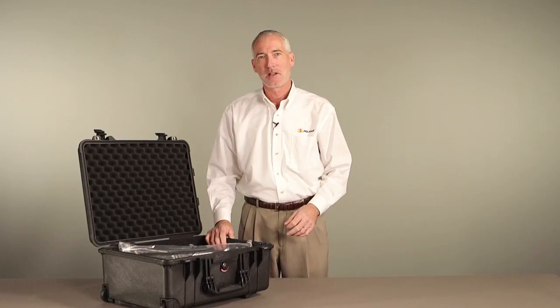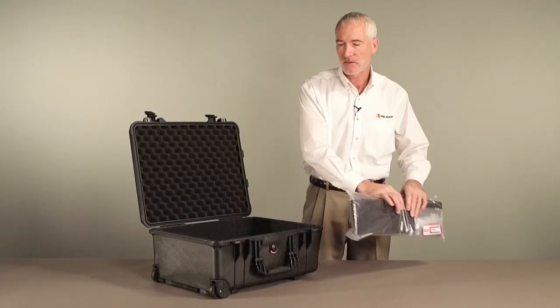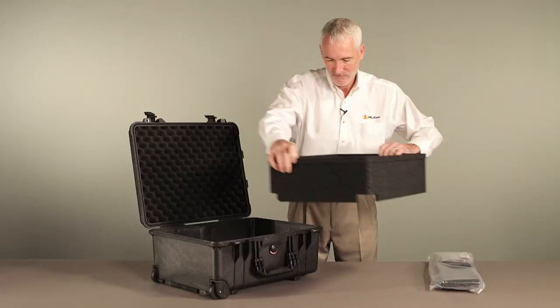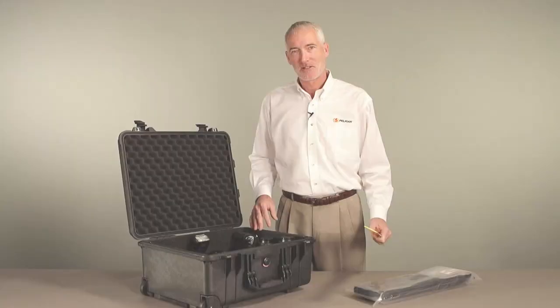The TrekPak system comes with extra-long divider sections, a cutting tool and locking pins, pre-installed wall panels, and a layer of bottom foam for protecting your equipment.